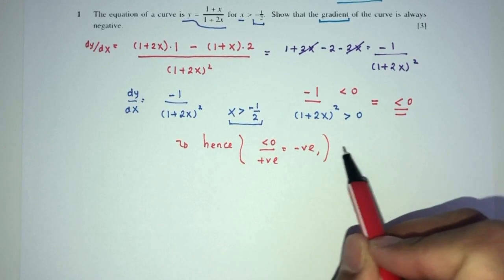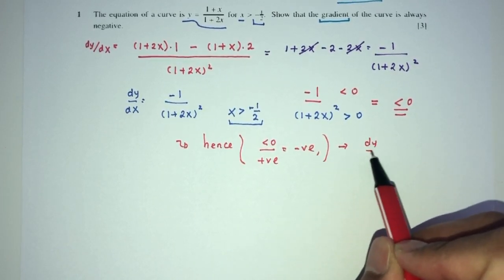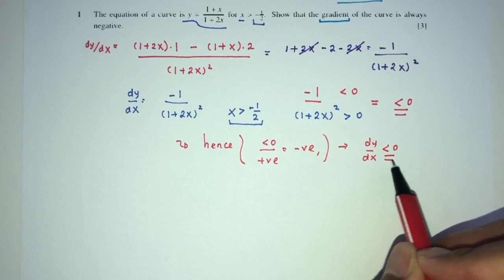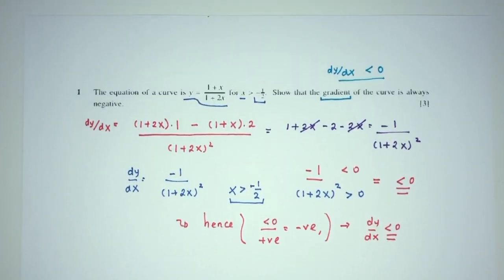Because of that, we can confirm dy by dx will always have to be negative. That's the reason why. And this is your question number one.